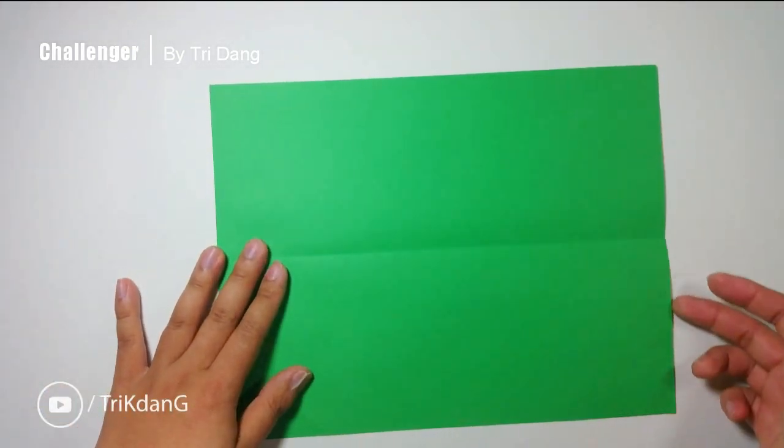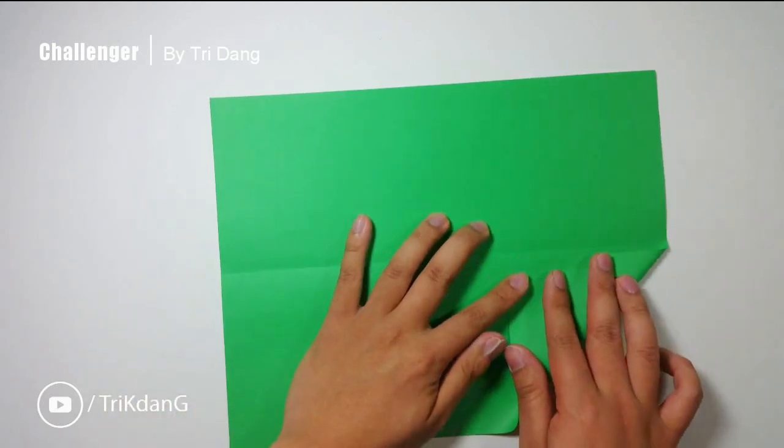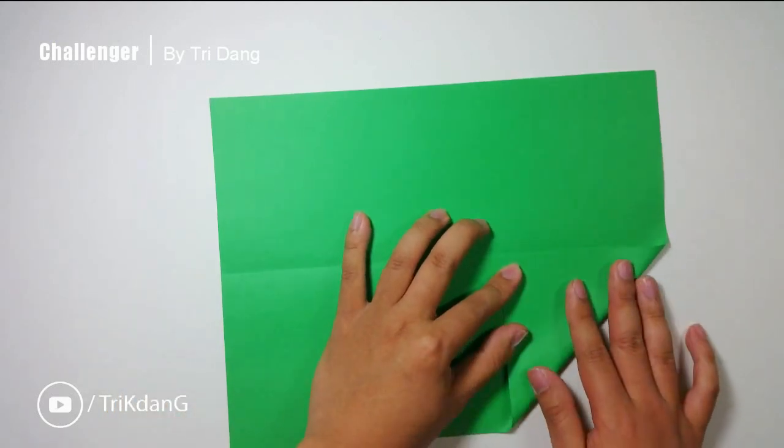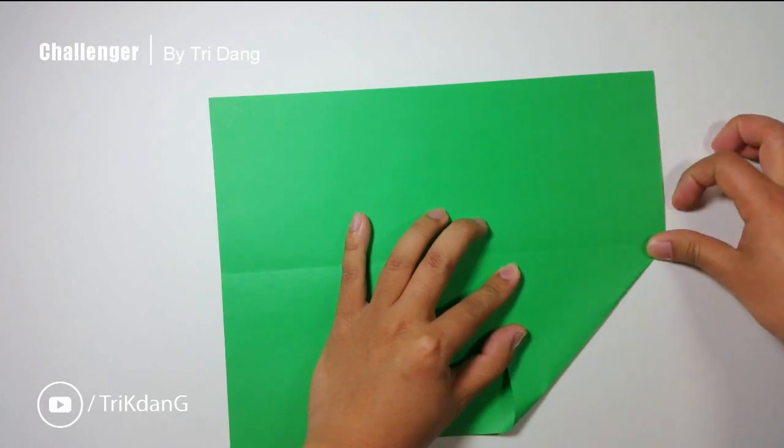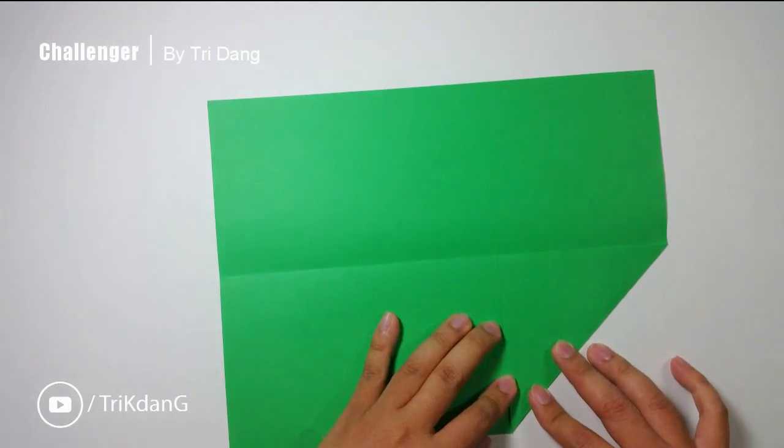Next, start from this edge, fold it to the center crease. And repeat the same fold for the opposite side.